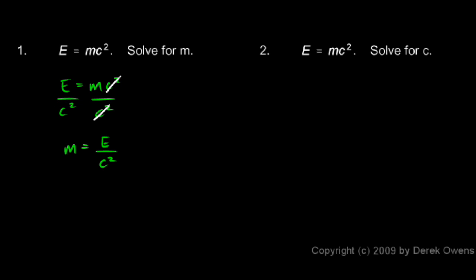In example two, we're told to solve this for C. So we take the original equation, E equals MC squared, and we divide by M on both sides. The M's cancel, and we're left with C squared equals E over M.